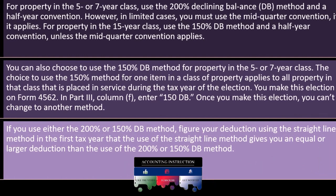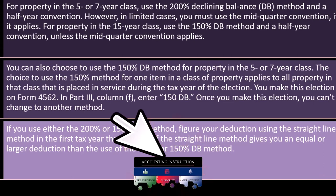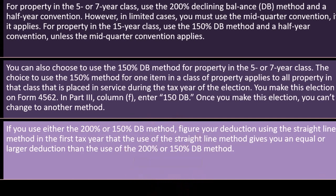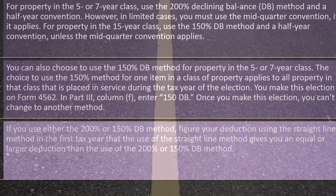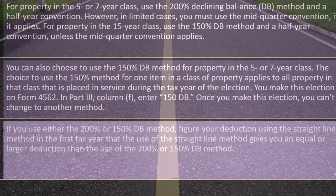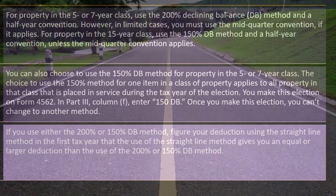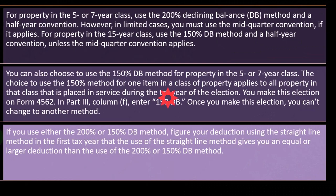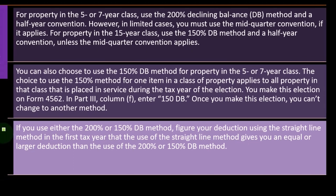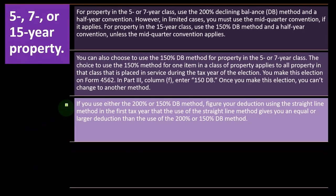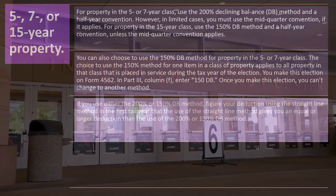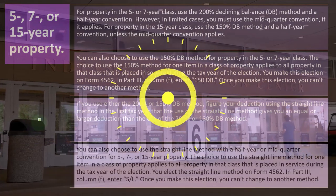If you use either the 200% or 150% DB double declining balance method, figure your deduction using the straight-line method in the first tax year that the use of the straight-line method gives you an equal or larger deduction than the use of the 200% or 150% DB method. It gets a little funny when you think about the calculations, because what happens is if you had a straight-line method for an entire year, it would come out to the same number as a double declining balance with a half-year convention — which confuses people because that first year looks like a straight-line method.